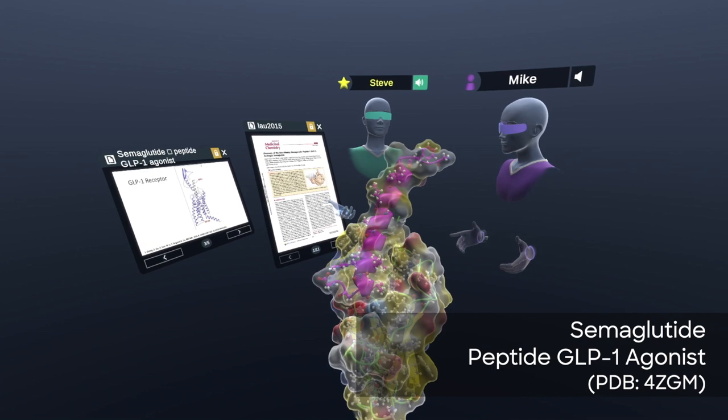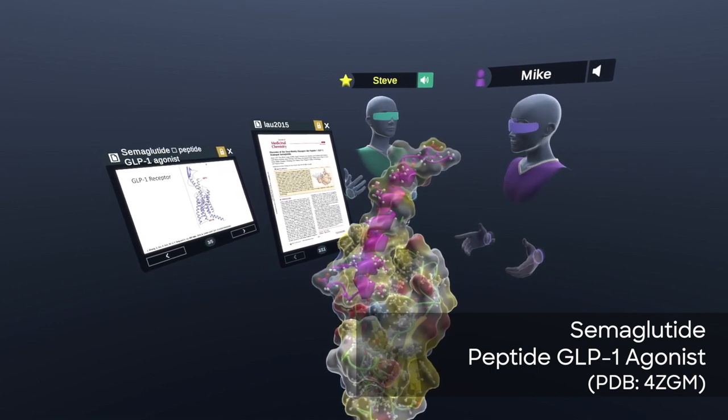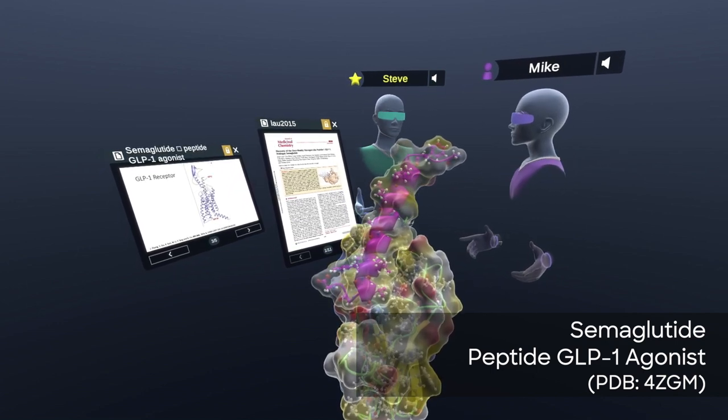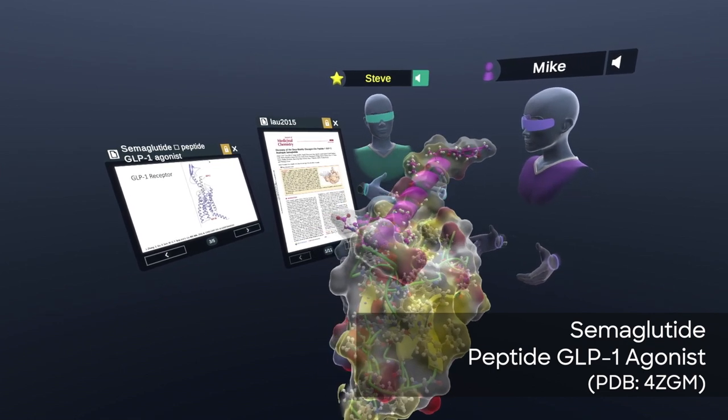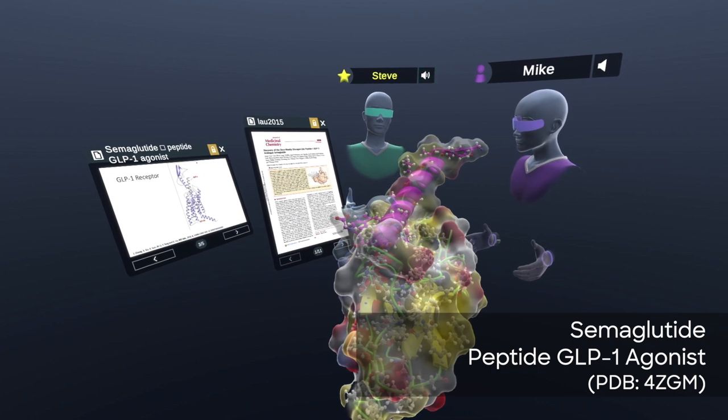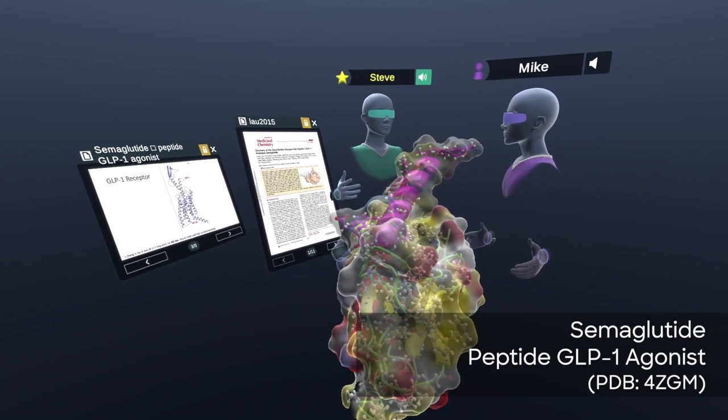But due to some really novel innovations, Novo Nordisk actually invented a way to take this orally. And so you just take a pill and this will interact with various proteins in your body and help reduce your blood sugar.